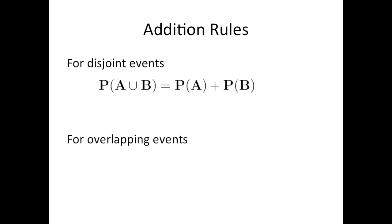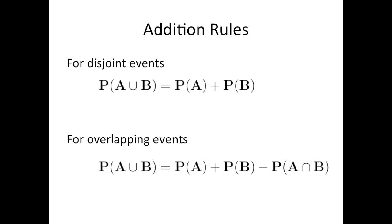For overlapping events — in other words, events that are not disjoint — the probability of A or B equals the probability of A plus the probability of B minus the probability of A and B. This formula takes into account the overlap between the two events, so the cases where A and B occur together are not counted twice.